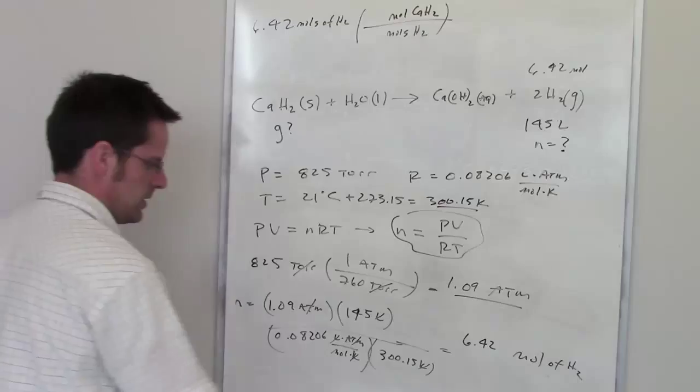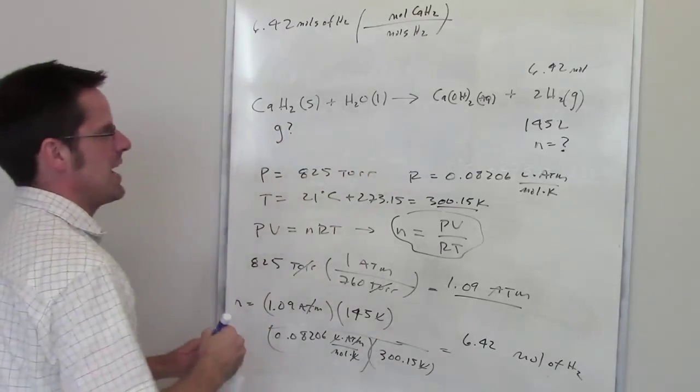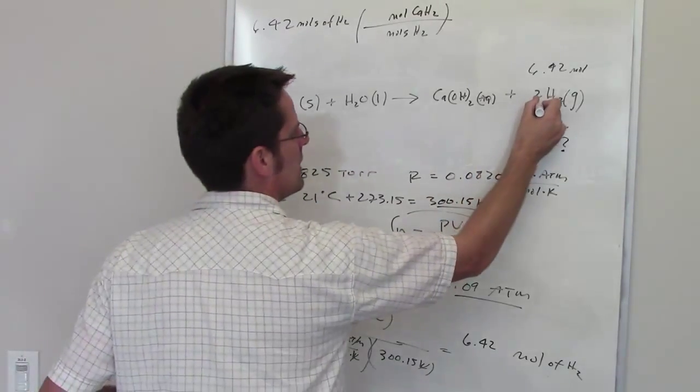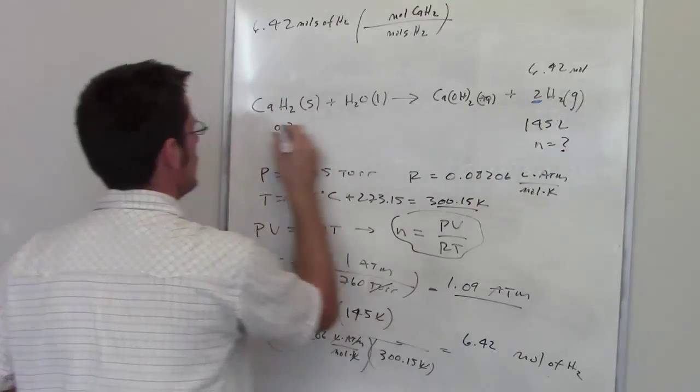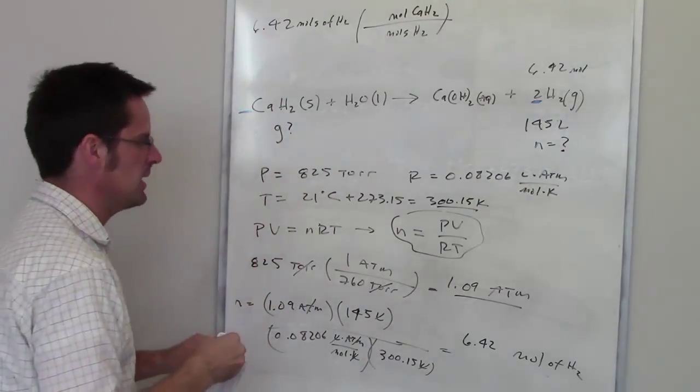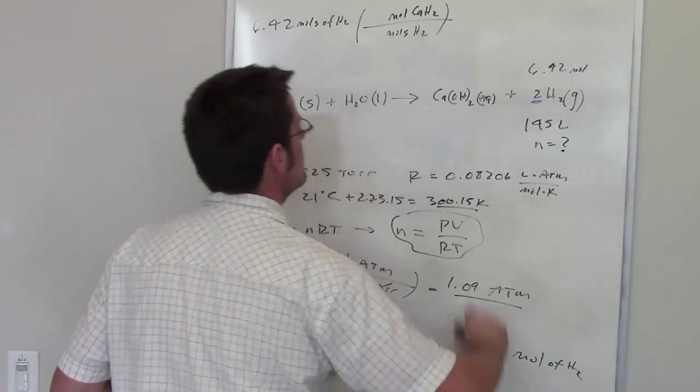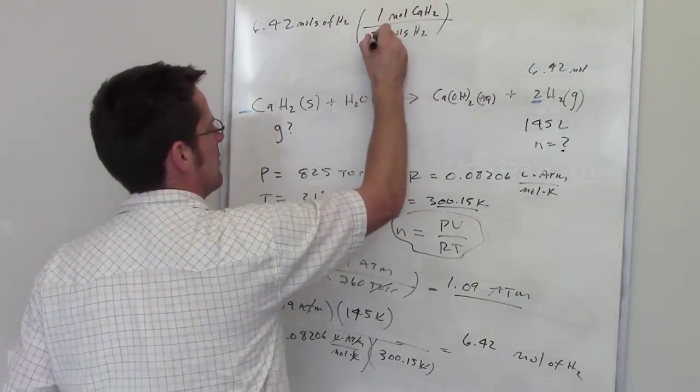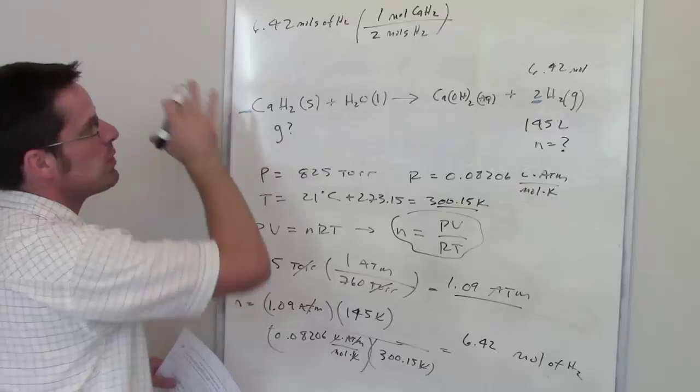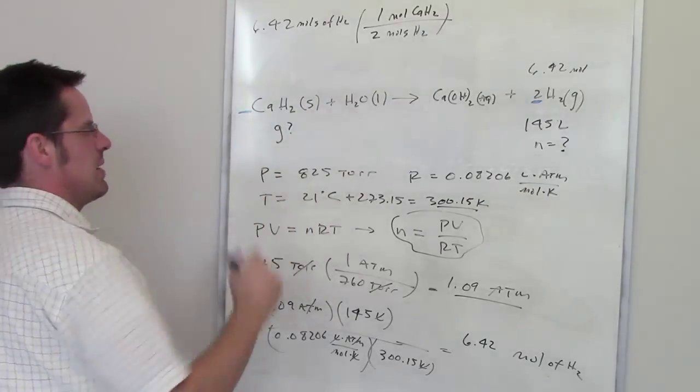Can we relate those two to each other? Of course we can. In this balanced chemical reaction, there are two moles of H2 for every one mole, there's not a one written there but it's implied, of calcium hydride. So I can put one mole of calcium hydride for every two moles of hydrogen. If I were to do that, that would tell me how many moles of calcium hydride I need.